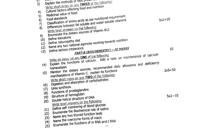Biochemistry short notes: digestion and absorption of carbohydrates; ureosynthesis; functions of prostaglandins; structure of hemoglobin; double helical structure of DNA. Brief answers: define self-monitoring of blood glucose; enumerate biochemical role of iodine; name any two thyroid function tests; name coenzyme forms of niacin; enumerate the functions of messenger RNA (mRNA) and transfer RNA (tRNA).